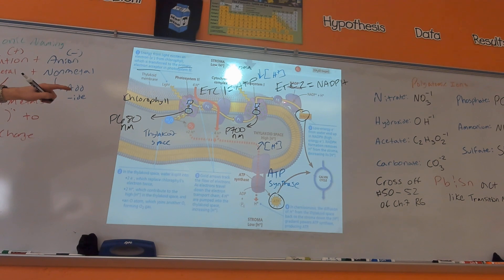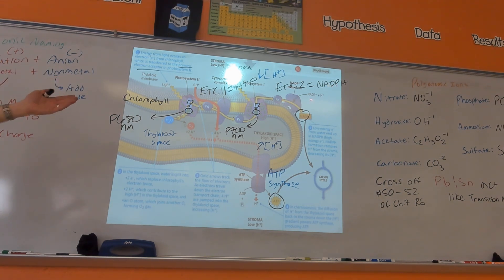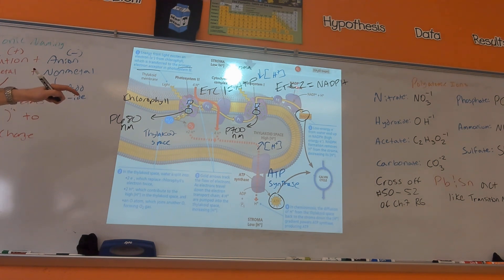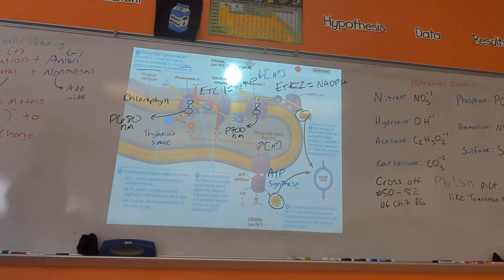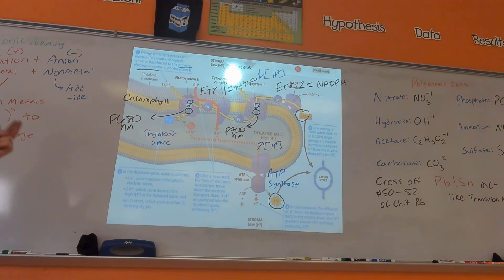The second electron transport chain has a simpler story — it just makes NADPH. There's an enzyme called NADP+ reductase that produces NADPH. Notice that photosynthesis uses NADPH, not just NADH — the P stands for an extra phosphate on that molecule.